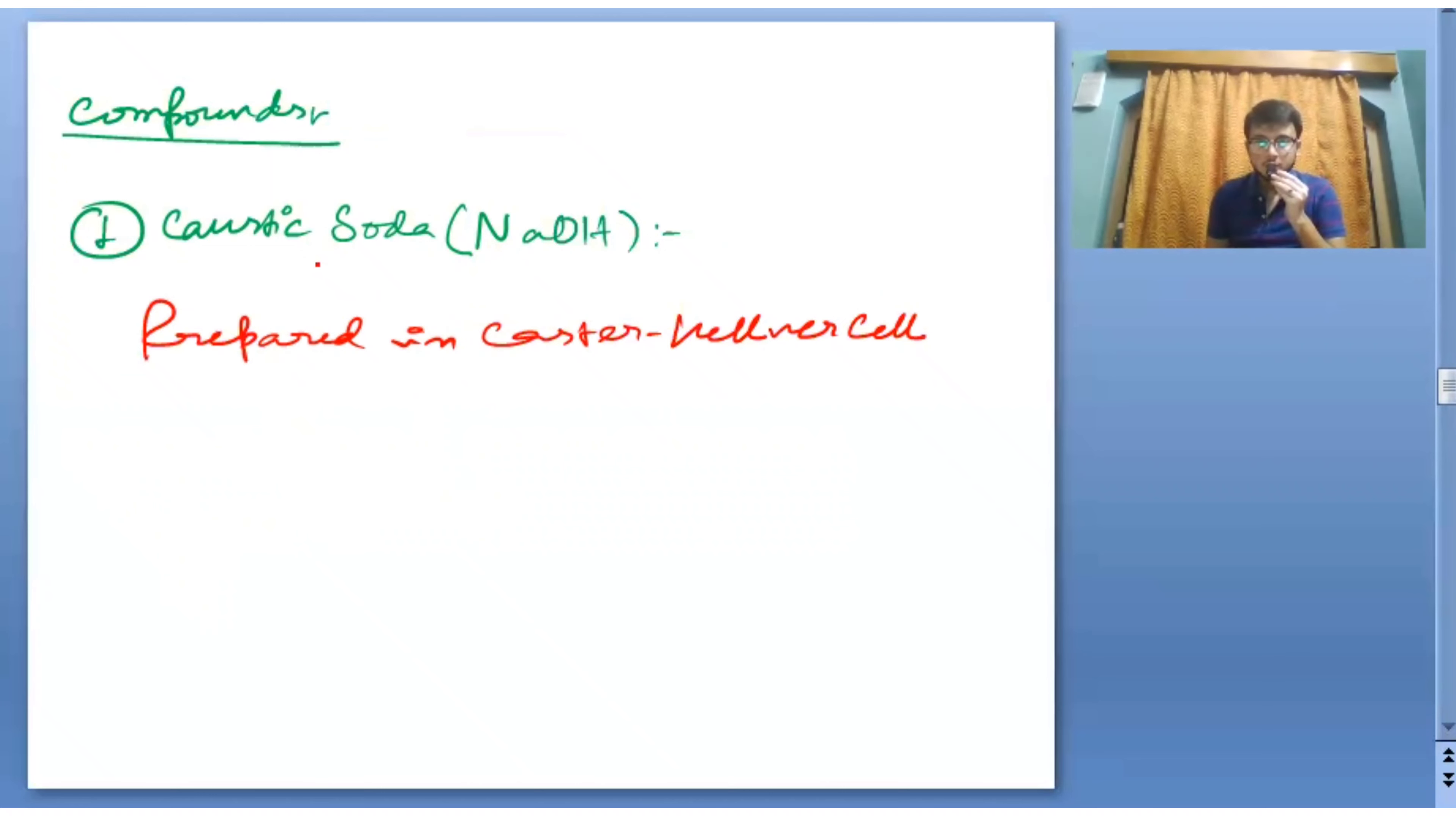Caustic soda. We know that it is NaOH. There are not very important reactions in this. Just remember that it is prepared in Castner-Kellner cell. Sometimes they ask you the name of the cell.